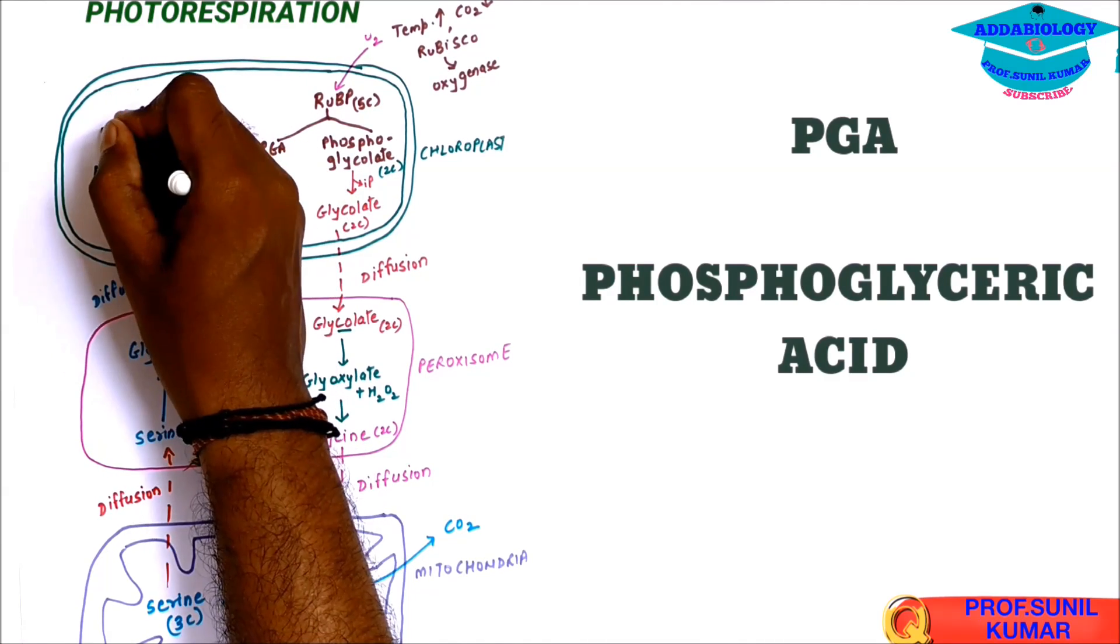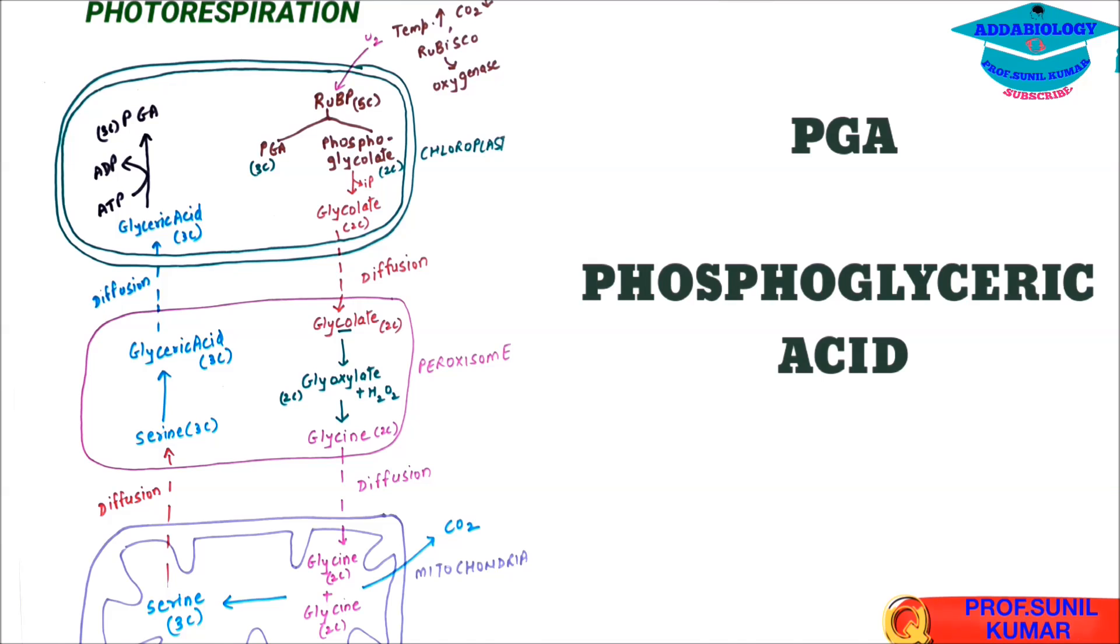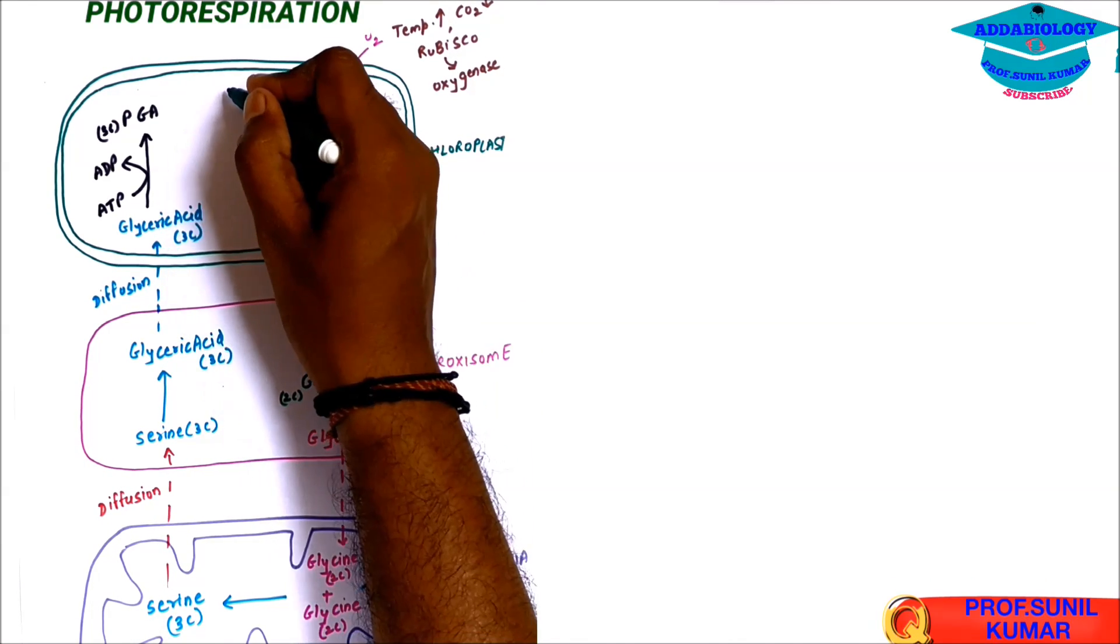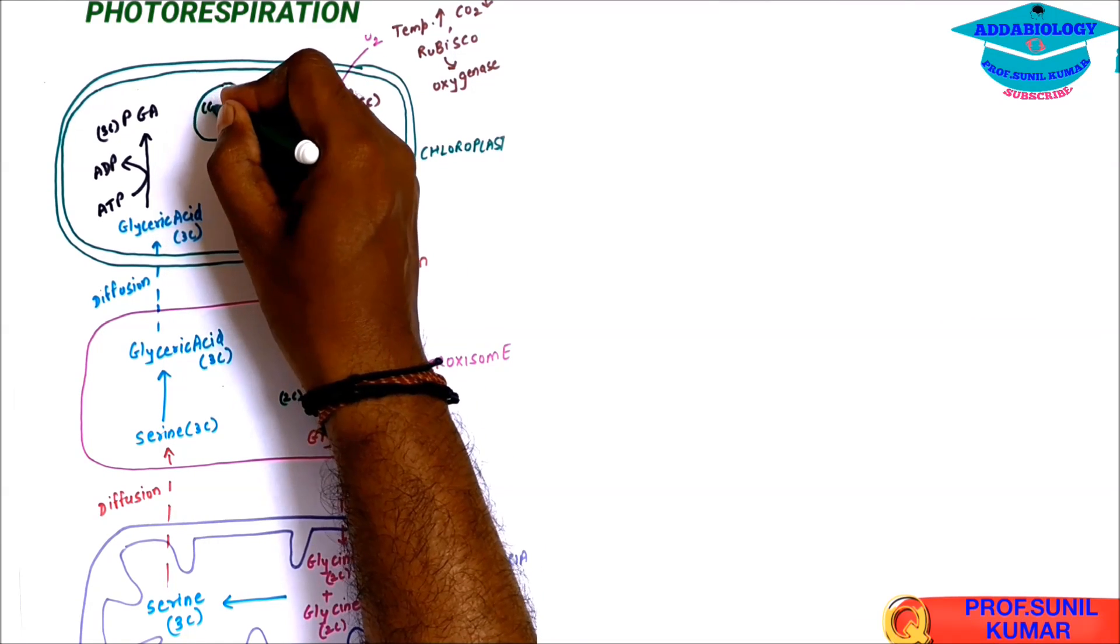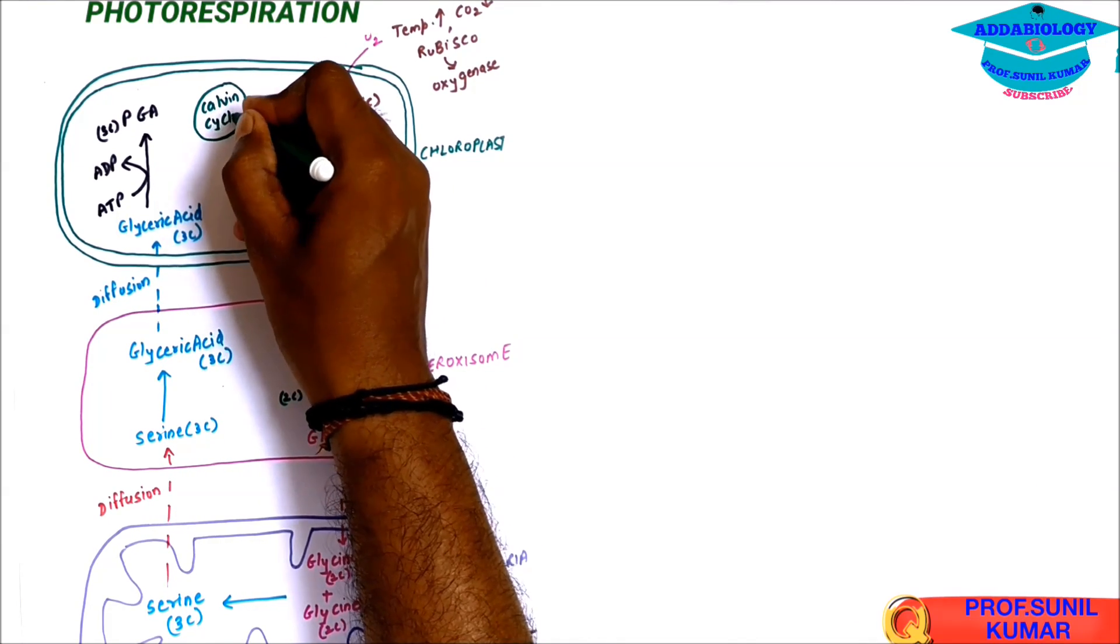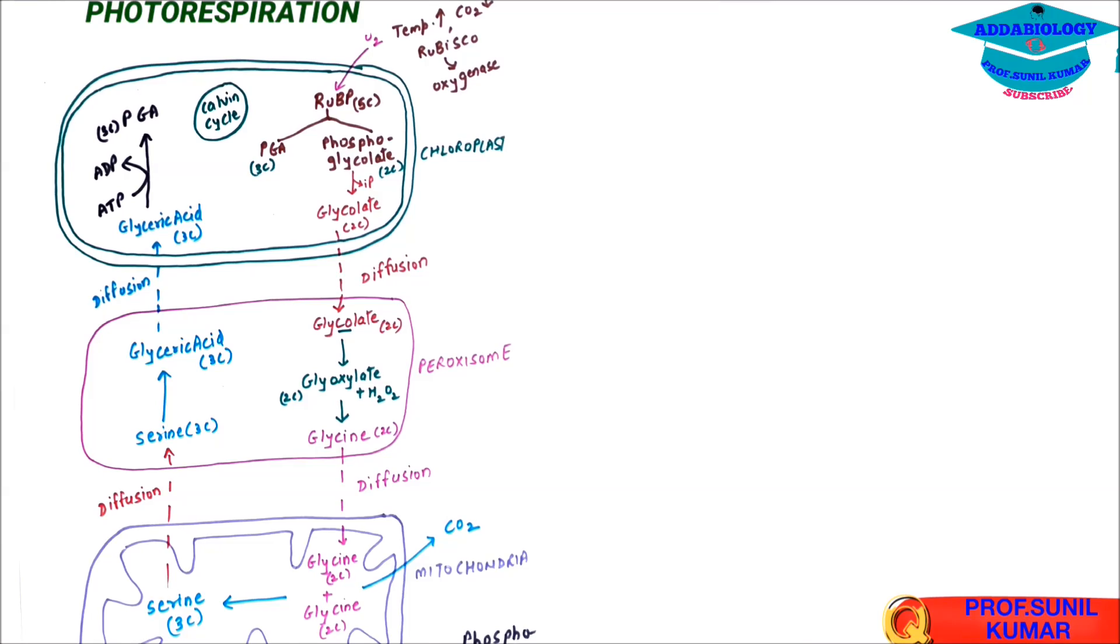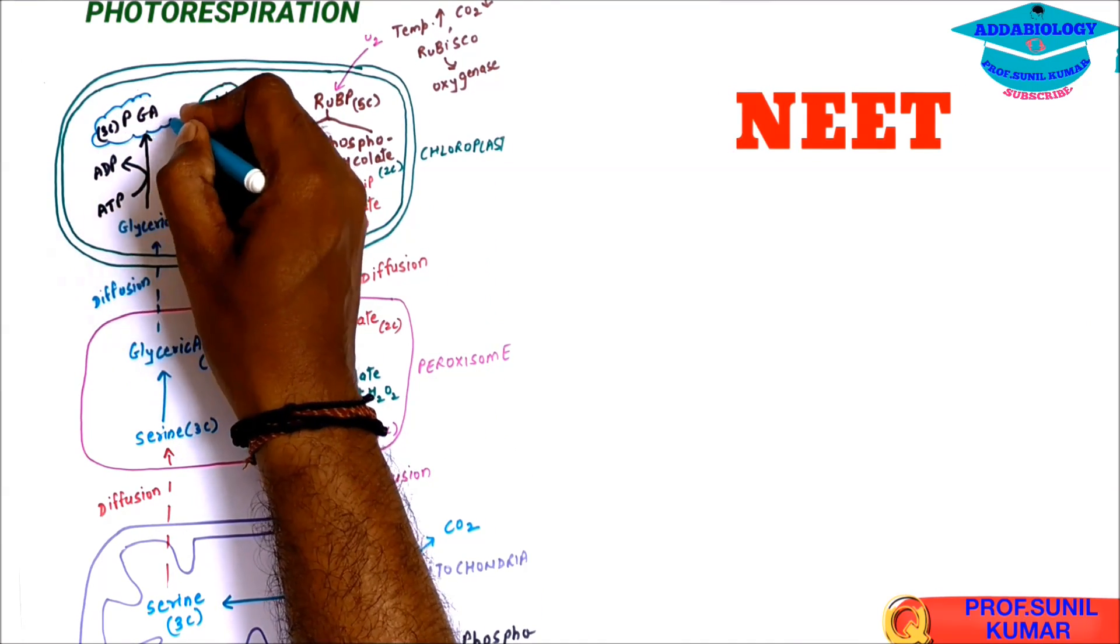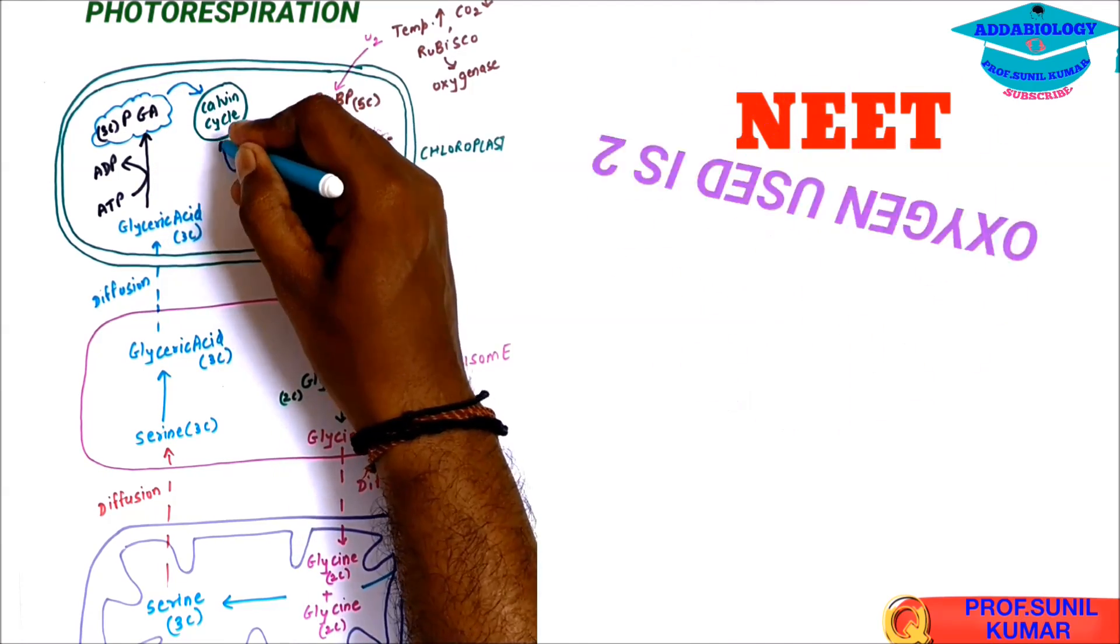So we have two PGA now. One PGA was formed from RUBP and this is the second PGA. So what is going to happen here? Both the PGAs will now enter in Calvin cycle, the C3 cycle, most important cycle for photosynthesis. So both the PGA will enter and it will go Calvin cycle to make glucose.